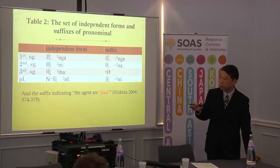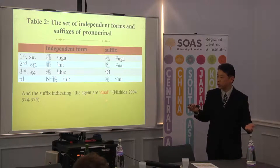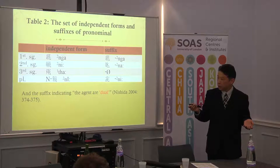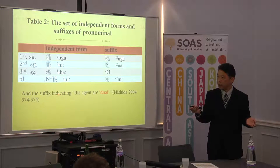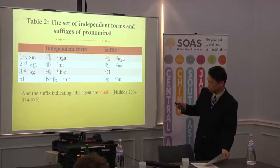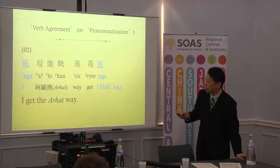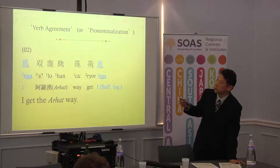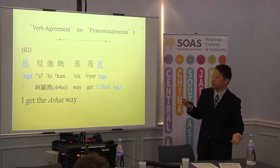Here, Professor Nishida Tatsuo proposed in his work that the agent suffix is dual. So there is a suffix indicating this, and now we will test it — we will show this kind of verb agreement. It's a popular grammatical phenomenon in Tibeto-Burman languages. For example, the first character is the top of the sentence and the last character is the same sound, which suggests a kind of agreement between the independent form and the suffix form.